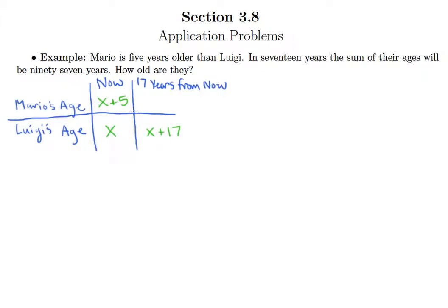And if Mario's age is x plus five, should be pretty clear that you just take the age that he is now and add 17 to it. And we can simplify that—for Mario it's five plus 17 is 22, so you could just say x plus 22.